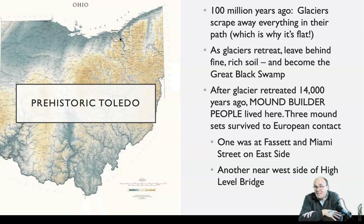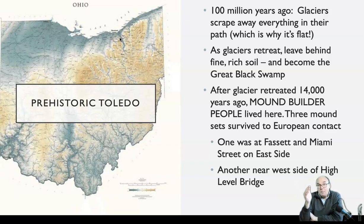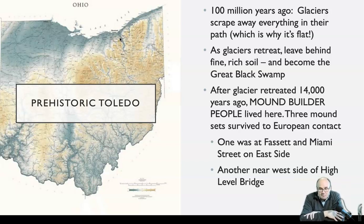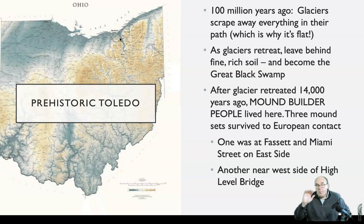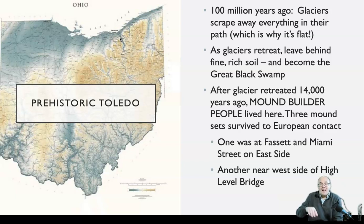The glacier takes a long time to retreat. After the glacier retreats, about 14,000 years ago, there were people who lived here who we call the mound builder people. We don't know a lot about how they lived, but we do know that they built mounds for ceremonial and burial reasons. Three mound sets survived in northwest Ohio up to European contact. Two of those sets are gone, and one is still around.